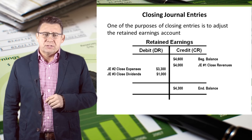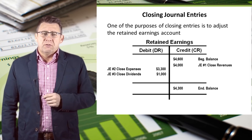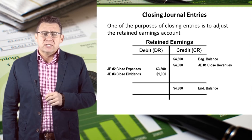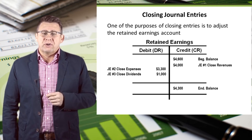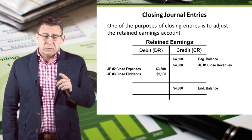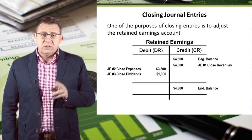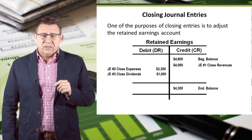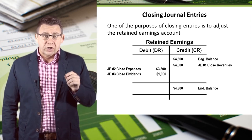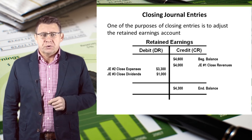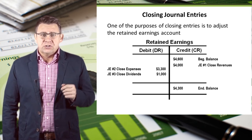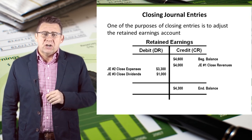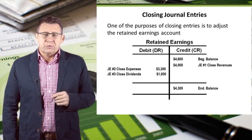Let's look at the retained earnings account. We started with a $4,600 credit balance, which came from the trial balance. We increased the account when we closed revenue — recall that revenues increase equity, and this journal entry is how that happens. We decreased the account when we closed expenses and dividends — recall that expenses and dividends decrease equity, and these are the journal entries that make that happen. Finally, we have an ending credit balance of $4,300.